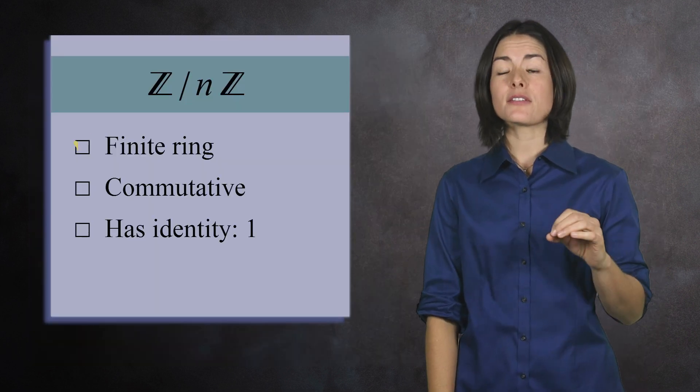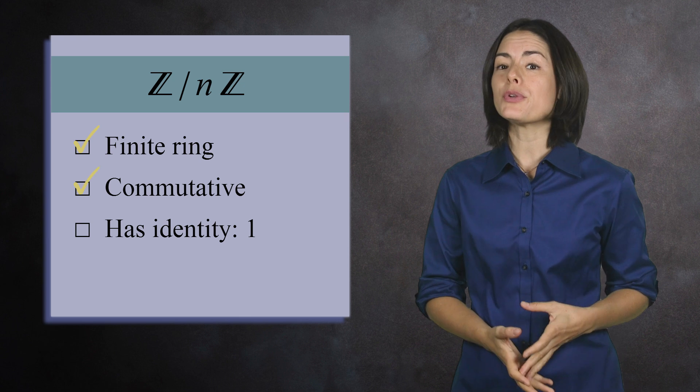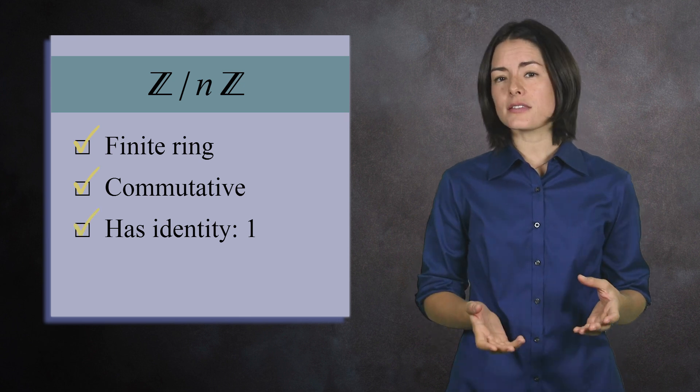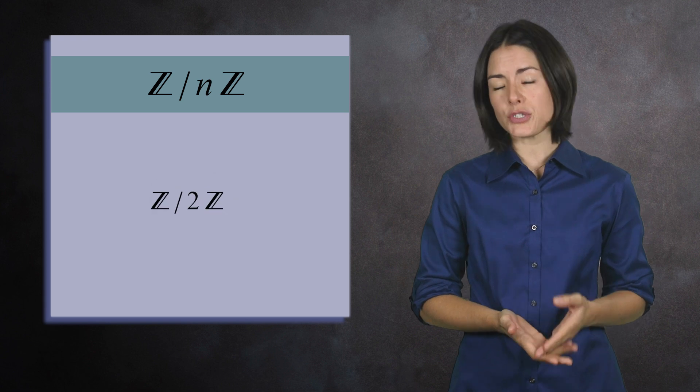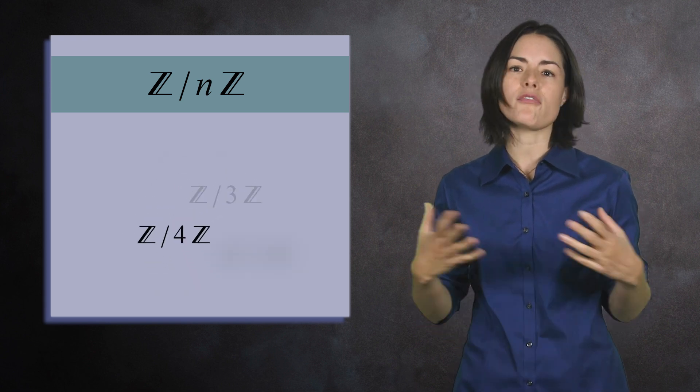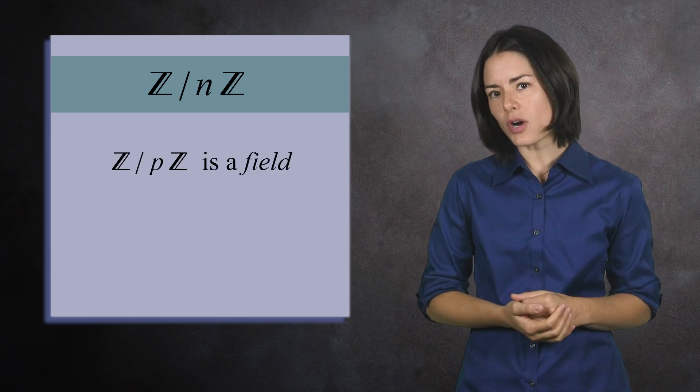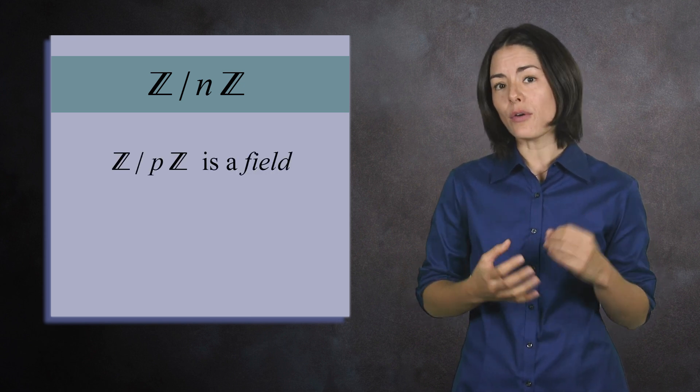The integers mod n is a finite ring. It is also commutative and contains an identity element 1. This gives us a nice list of finite rings. The integers mod 2, mod 3, mod 4, mod 5, and so on. But something special happens when n is a prime number. If n is prime, the integers mod n is now a field.